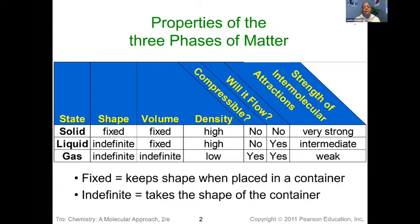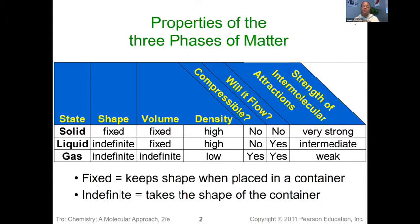I want to revisit a diagram that you may have seen back in chapter one where we talked about the different phases of matter: your solid, your liquid, and gas. They all have different shape or volume definitions associated with them. Solid material has a fixed shape and fixed volume — the shape and volume are not going to change based on whatever container you put it in. Whereas liquids have an indefinite shape, meaning they take the shape of the container, but a fixed volume. And gases have indefinite shape and volume, meaning they take on the shape and volume of whatever container they're placed in.